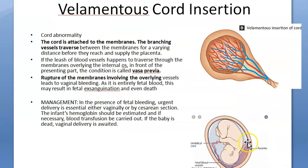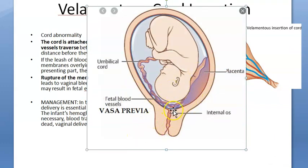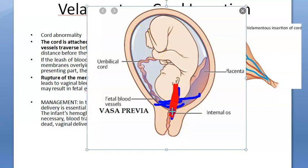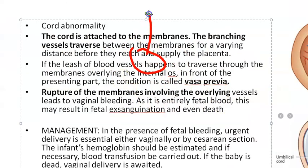This condition can lead to a complication called vasa previa. Especially in placenta previa, when vessels run within the membrane, as the baby tries to come out these vessels can get compressed, cut, or squeezed. If this membrane with vessels overlies the internal os in front of the presenting part of the fetus, this is called vasa previa.